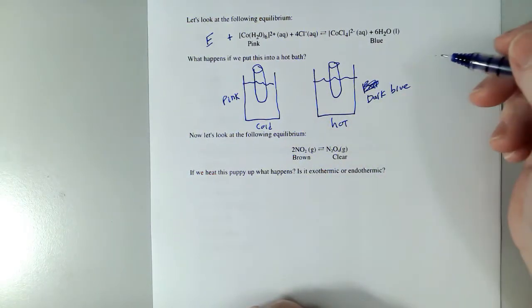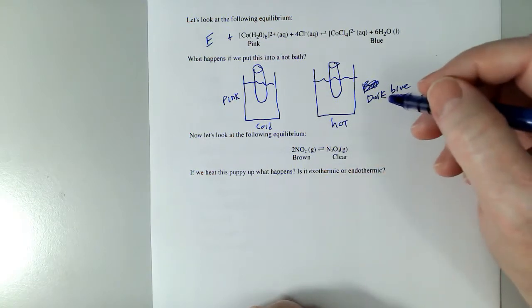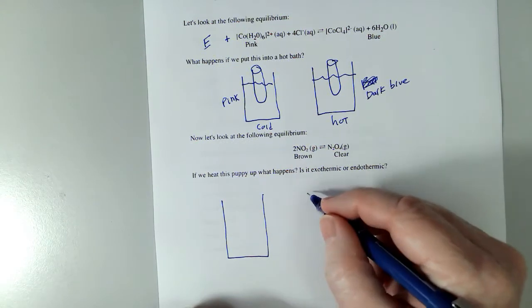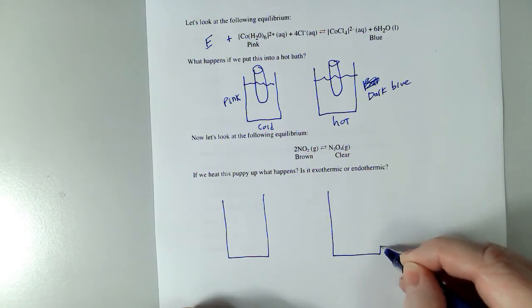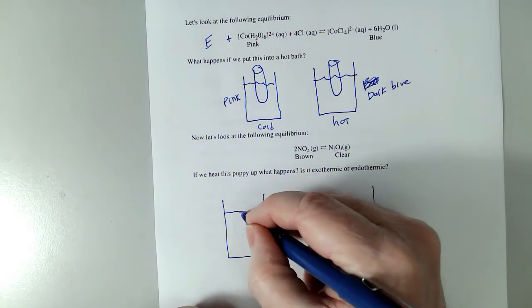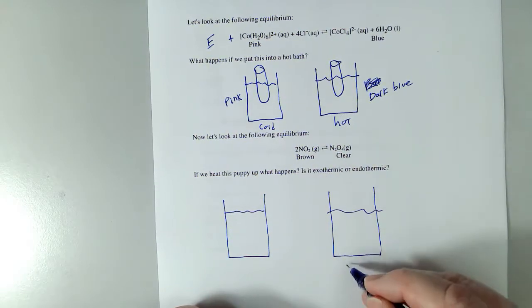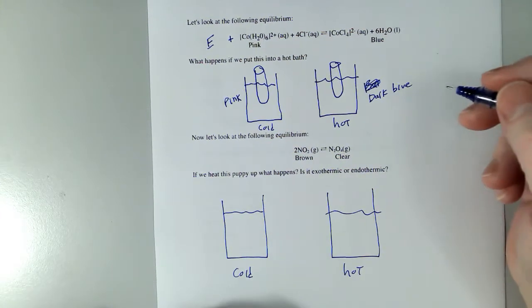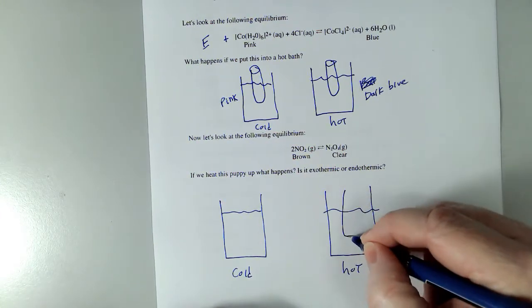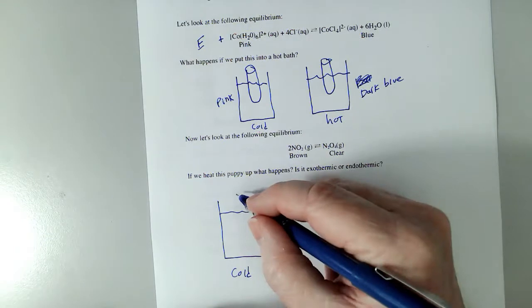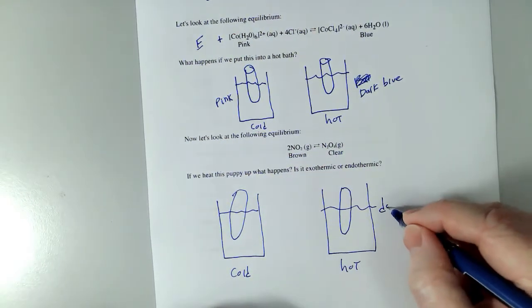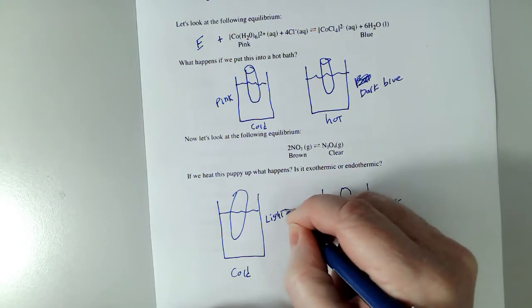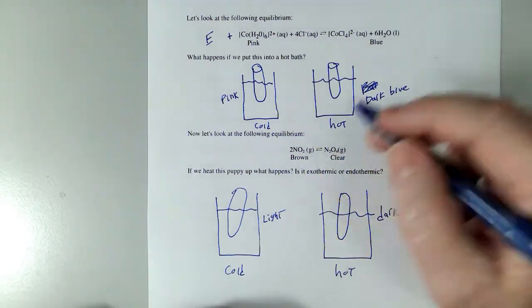Now, this one is not a solution. These are actually gases. And we'll do the same thing. One that's hot, one that's cold. Now, the one that goes into the hot water, this is a tube containing gas, a big glass tube. It becomes very dark. And the one that is in the cold water is very light.